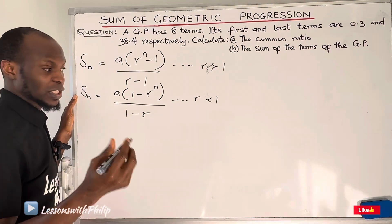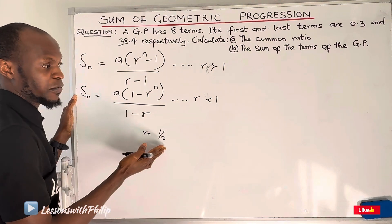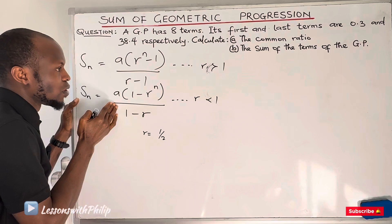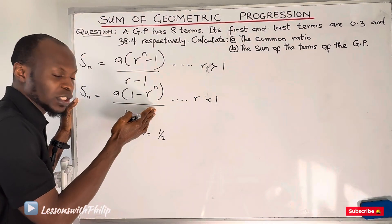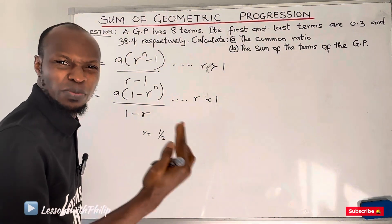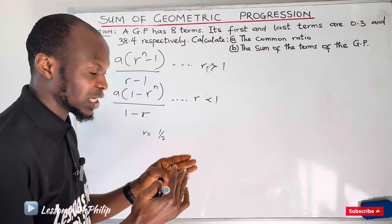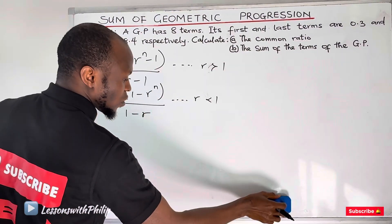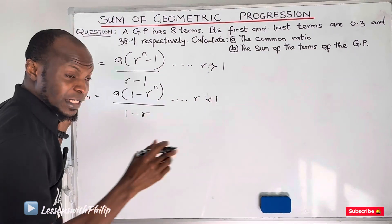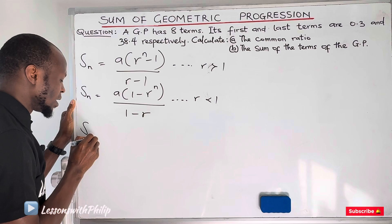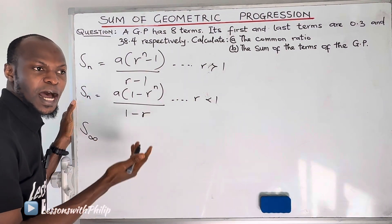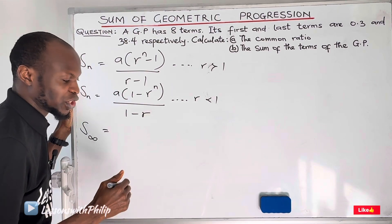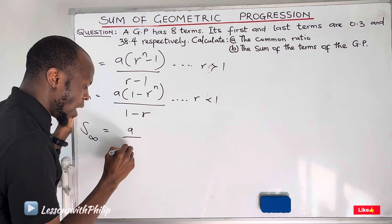For example, if my common ratio is half — equals to 1 over 2 — it will be most convenient to use the second formula. It is not compulsory; if you use the first formula even when your common ratio is less than 1, you will still get your answer, but it may be a little tedious or difficult to manage the signs, especially the negative signs.